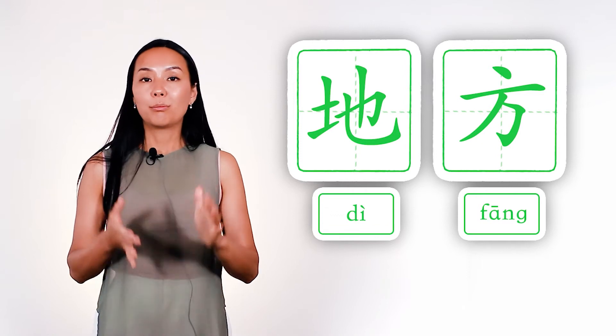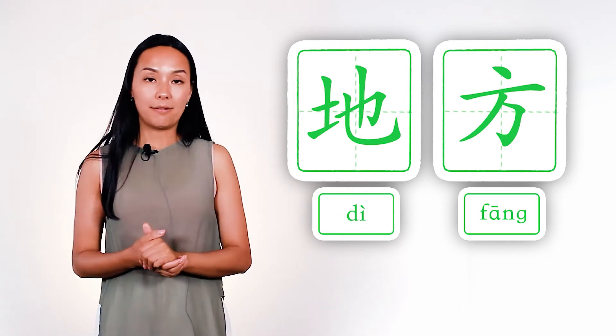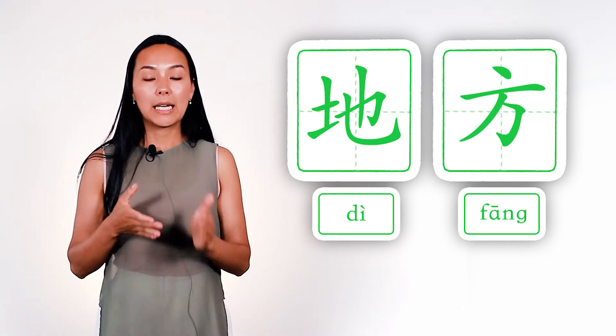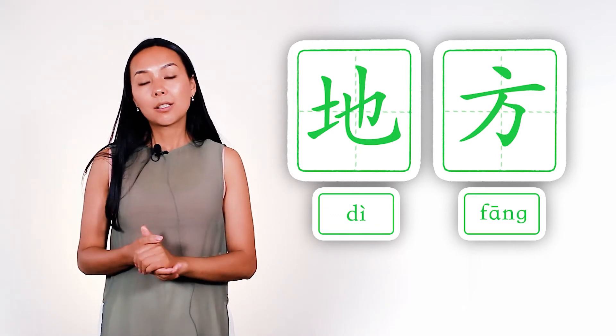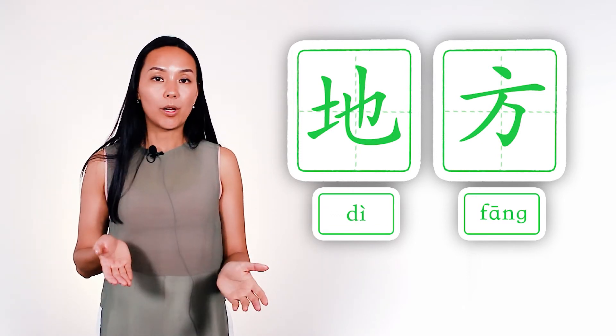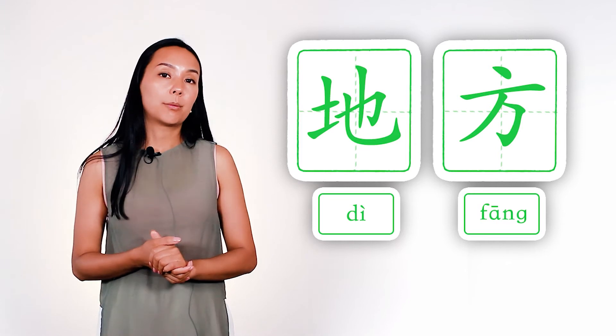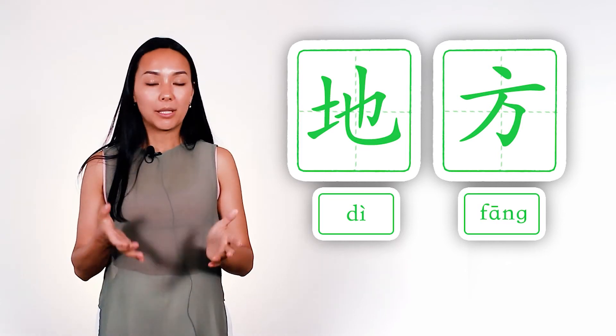And the last example is the word 'place' — di-fang. Di means place, fang means square, and together: place.